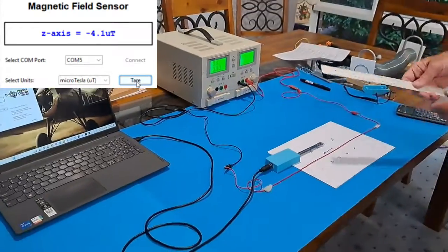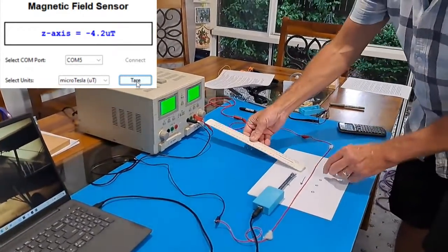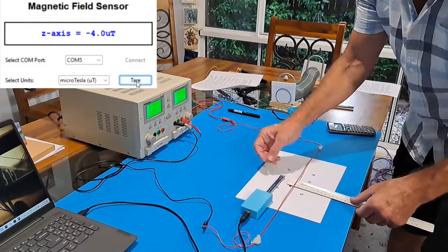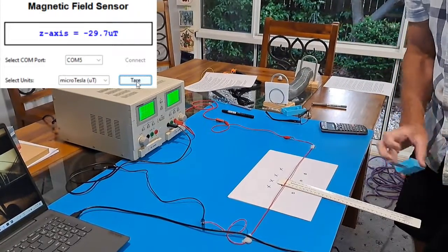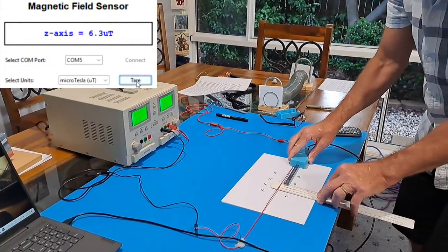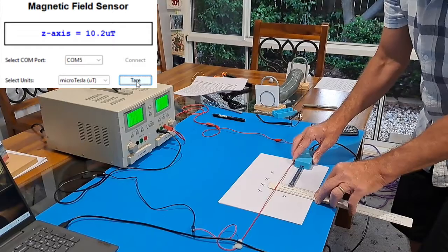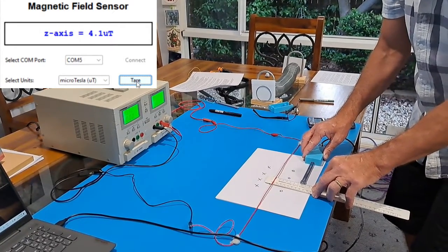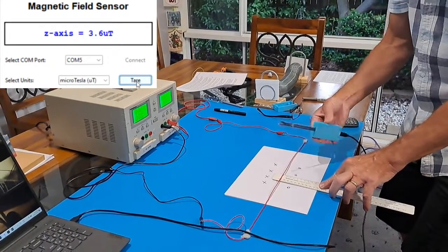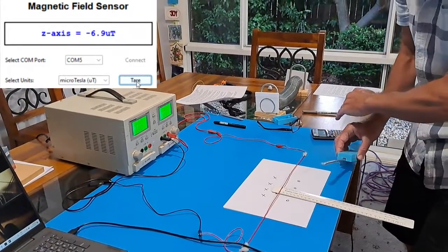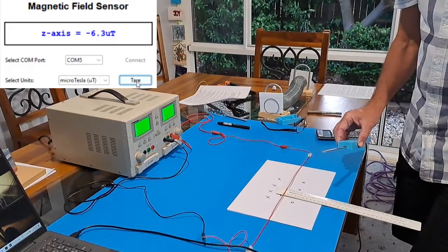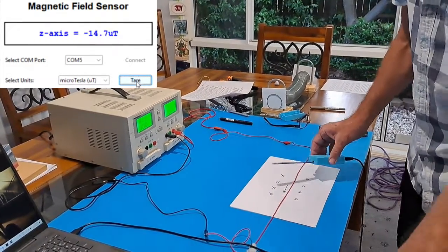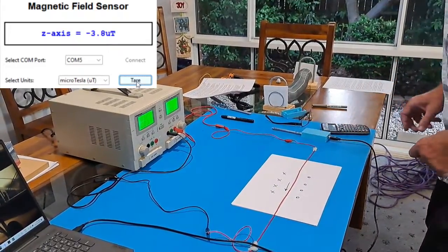But also, there's another experiment there. If a student wanted to do a student experiment, they could just set up a ruler like that and quite easily measure the magnetic field at different distances from a single current-carrying wire. So it is sensitive enough, even though we've just got one wire. It's sensitive enough to do that experiment. Let's have a look at another one.